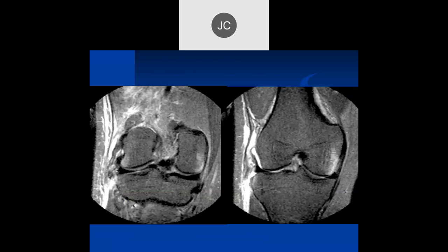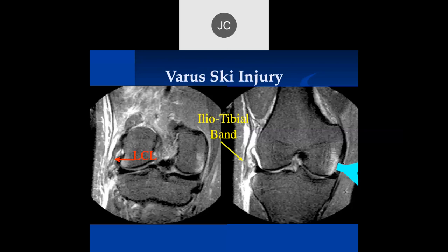This is the same patient — what else do you see here? More anteriorly now — are we anterior enough for the IT band? There's the lateral collateral ligament and the iliotibial band. In this particular case, the iliotibial band is completely torn off. It's attached to the tibia. And we can see some bone edema where the impaction occurs. So this is another valgus injury, and this was done skiing.